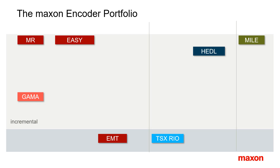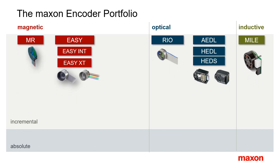Most of them are incremental encoders, but there are also a few absolute ones. You can classify them according to the underlying physical principle into magnetic, optical, or inductive encoders. The most important magnetic encoder families are the MR and EZ. The main optical encoders consist of the tiny RIO and the larger ADL, HDL, and HDDS. The only inductive encoder type is the MILE.